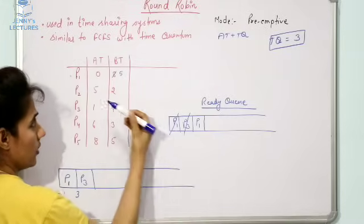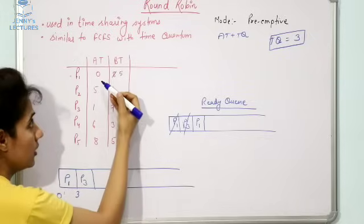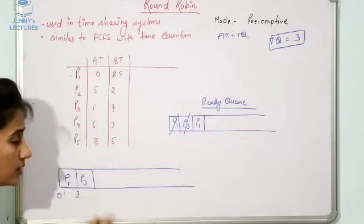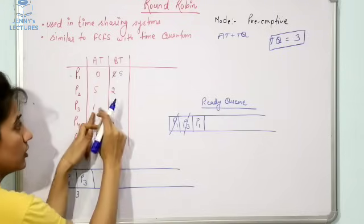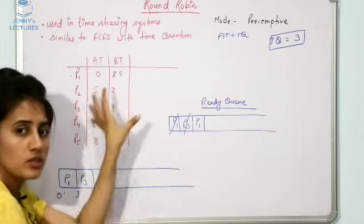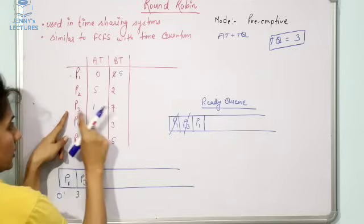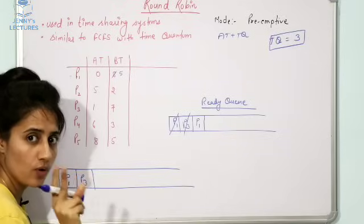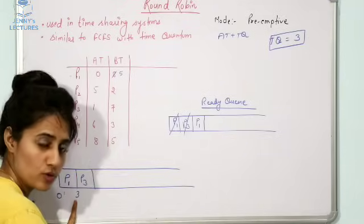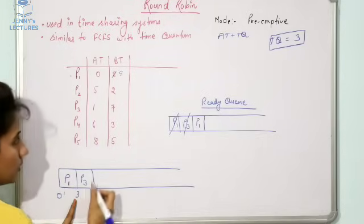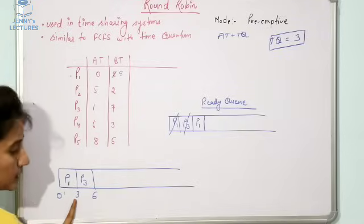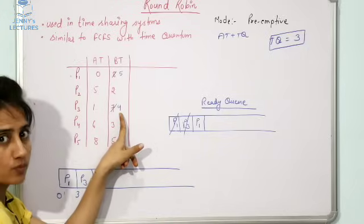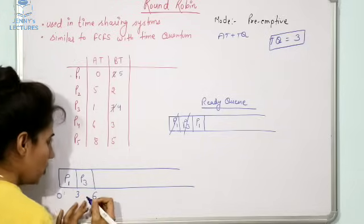It's not simply P2 after P1 — you must always check arrival time. For instance, P2 has arrival time five and P3 has arrival time one, so P3 comes before P2 in the ready queue. P3 requires seven units of time but we can only allocate three units in one go — this is preemptive. So from time three to six, P3 runs; remaining burst time is seven minus three, which is four units.